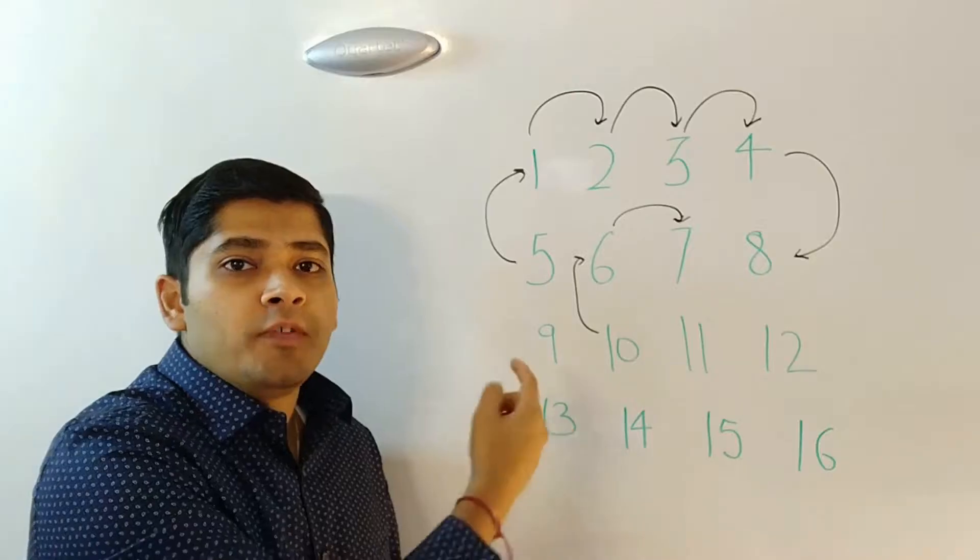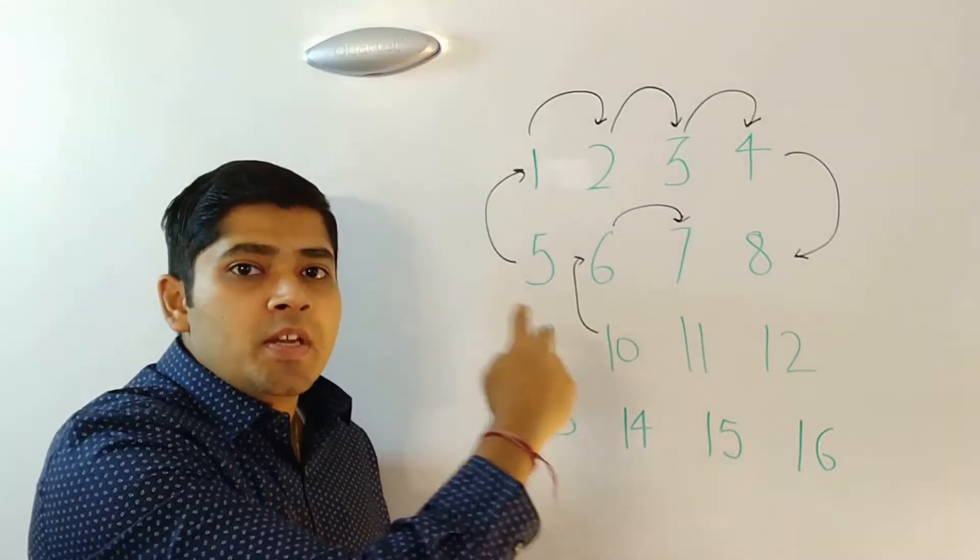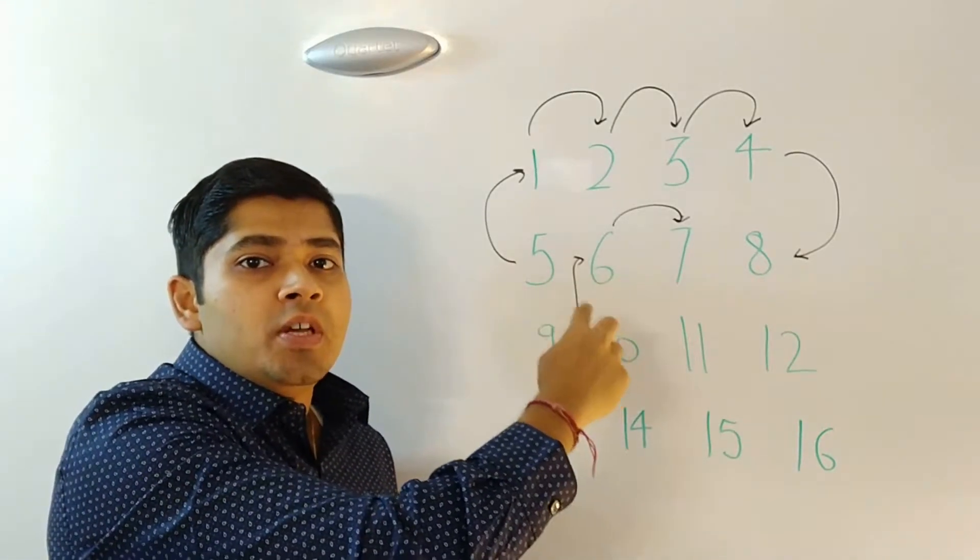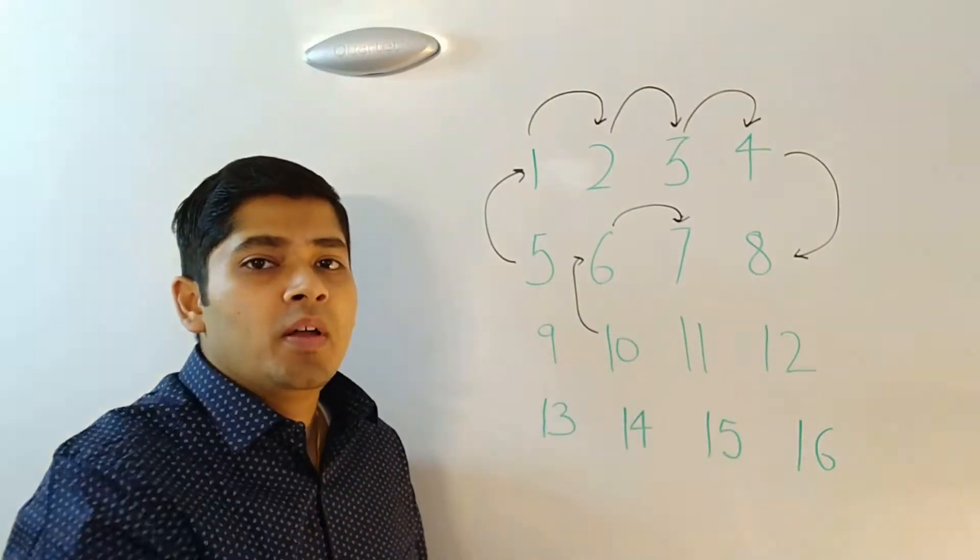For the inner ring too, we follow the same process. 10 will move to 6 position, 6 will move to 7 position and so on.